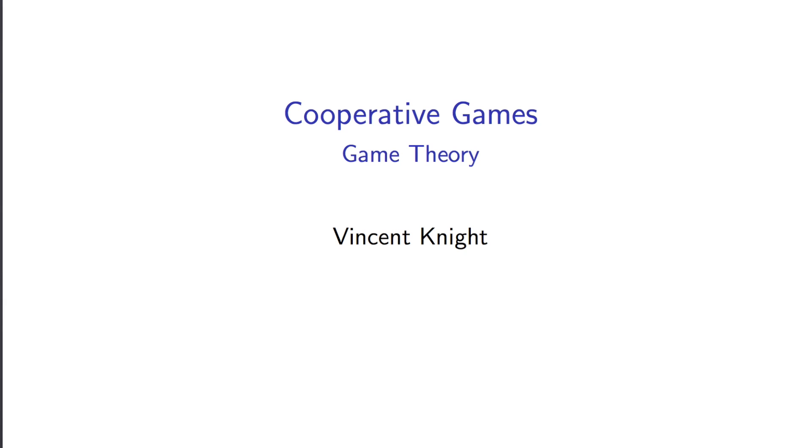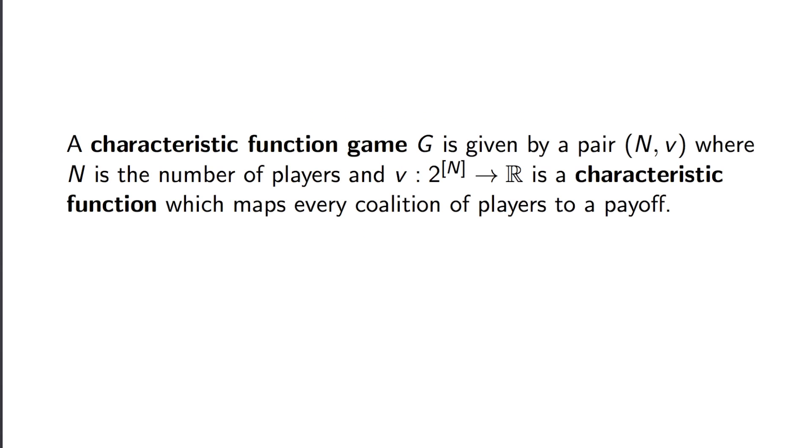In this video, we're going to take a look at what are called cooperative games. And a particular type of cooperative game we're going to look at is what's called a characteristic function game. So the game is a pair of a set of players and a function that takes every coalition of players and assigns it a value.